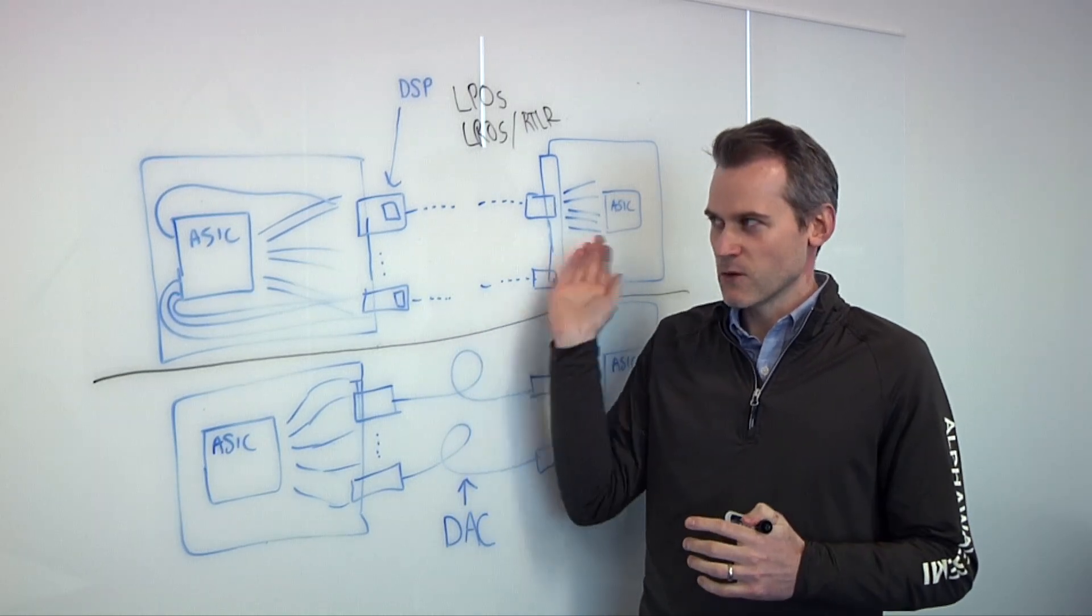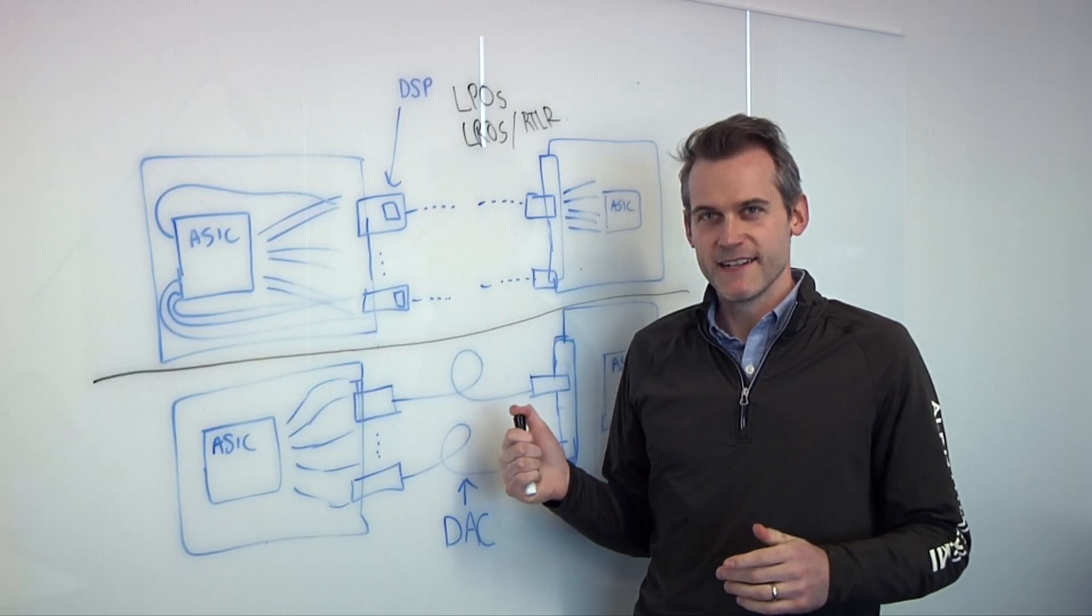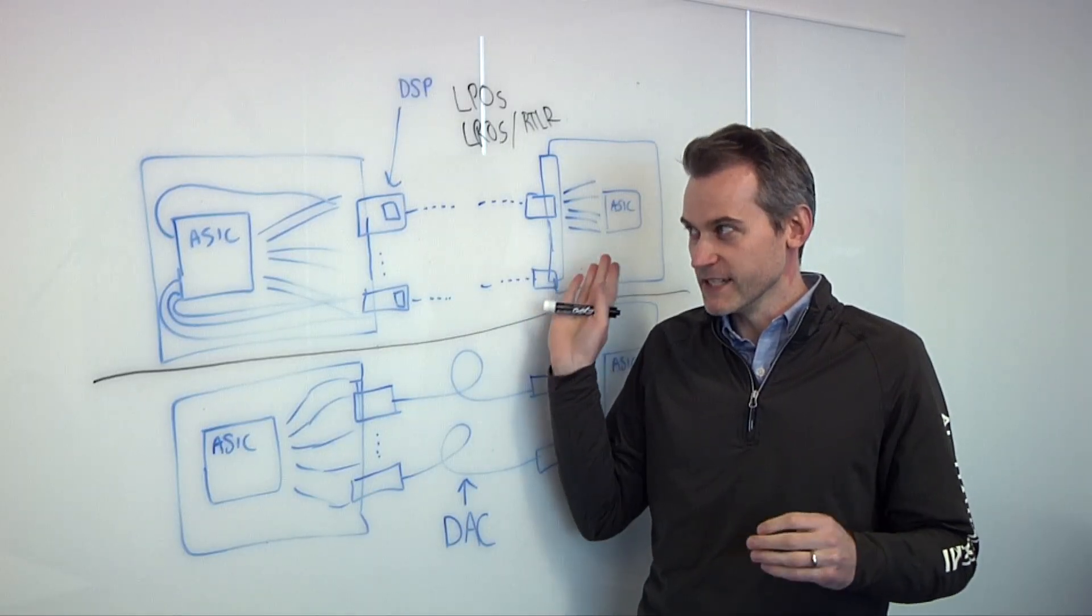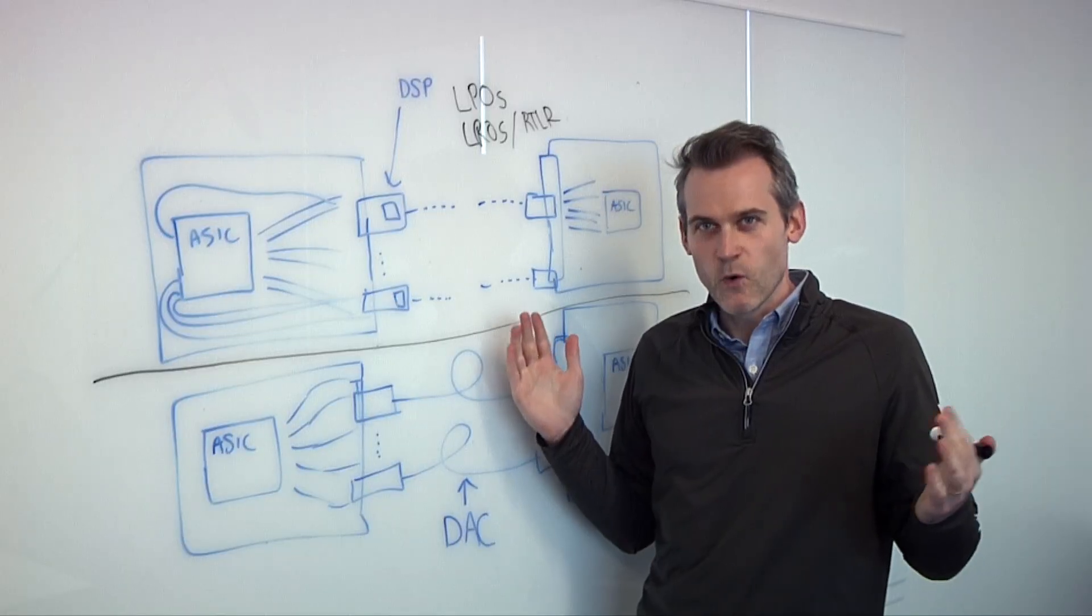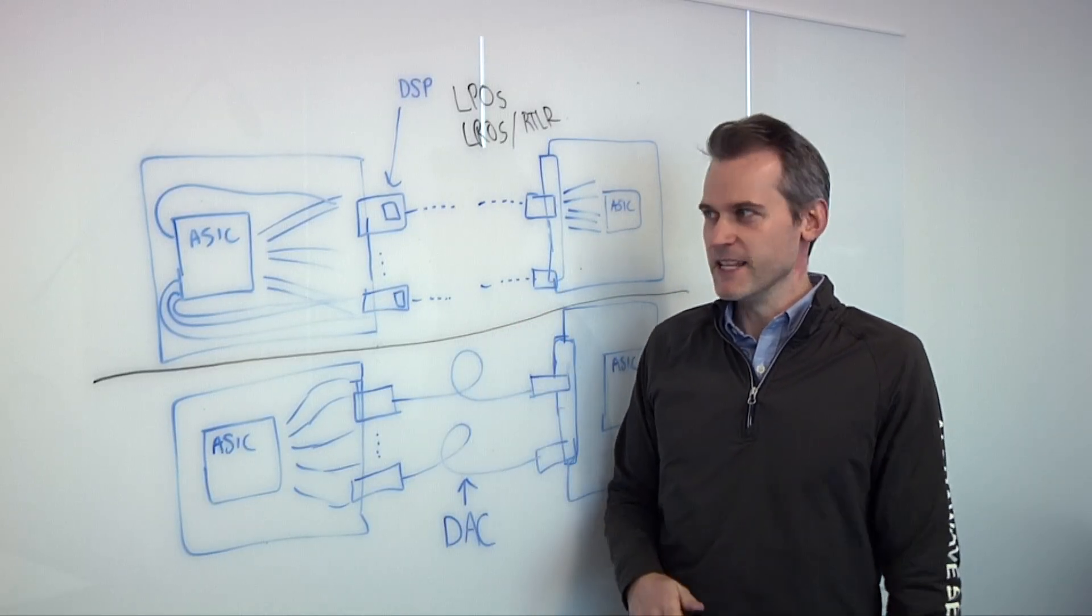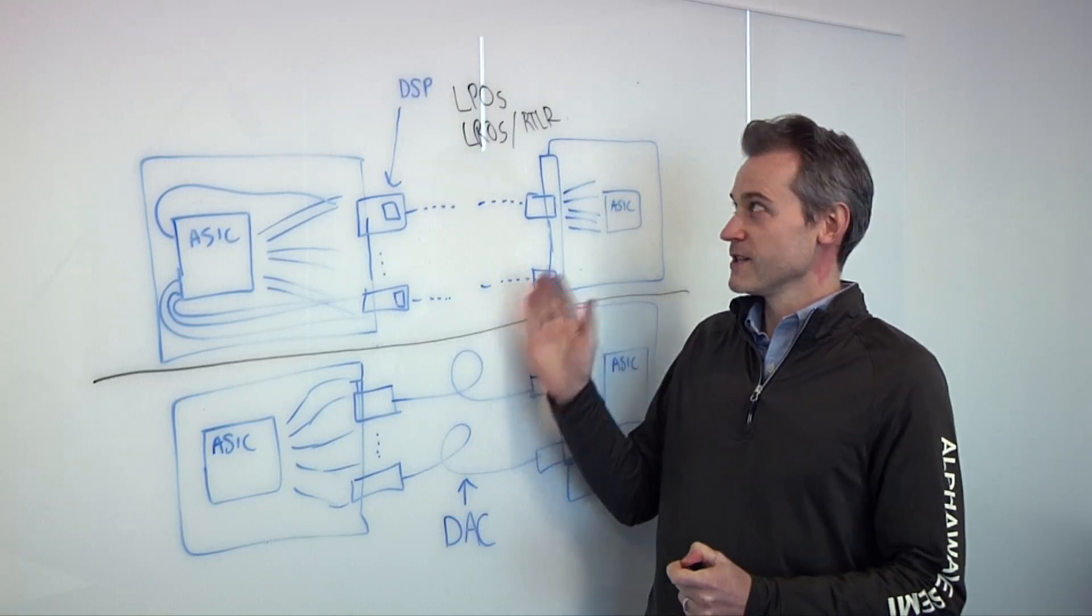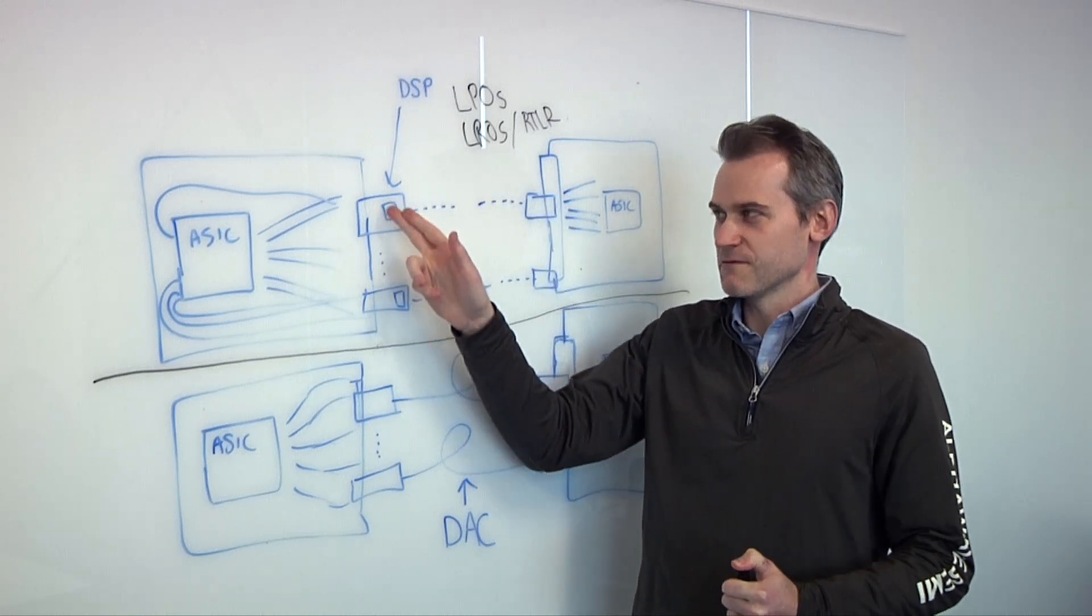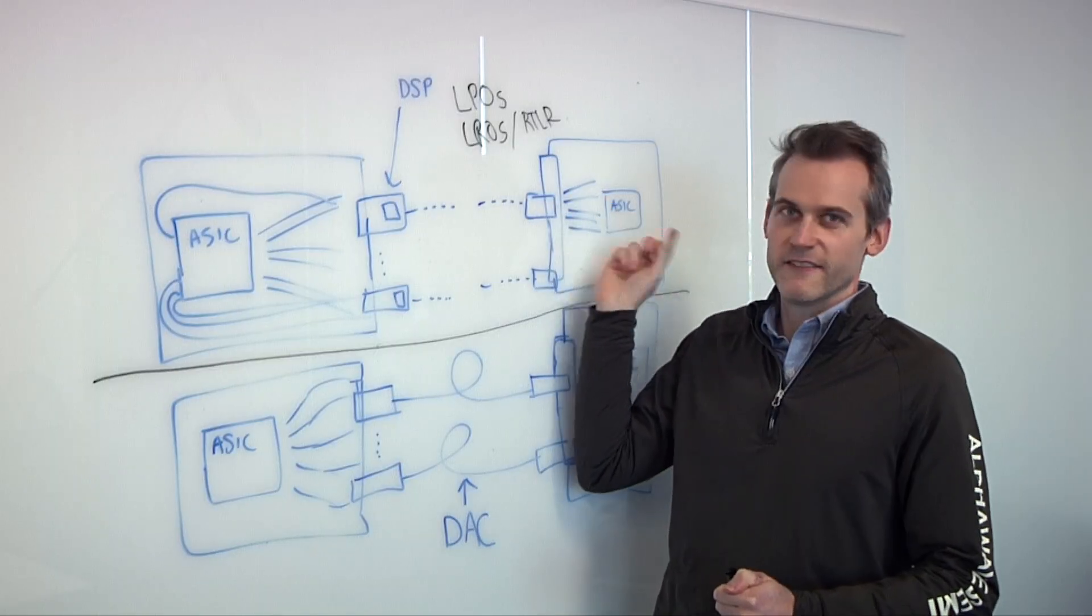If you're just replacing one optic, that doesn't really make sense. But when you think of these AI data centers that have hundreds of thousands, probably looking for millions of connections, the difference in saving 15 watts just compounds exponentially. And you're able to put more compute in there. So really that's the motivation for going towards LPOs, which is completely no DSP in them, or LROs, which only has a retimer on the transmit side and nothing on the far end host side.